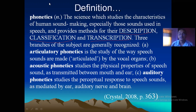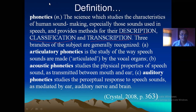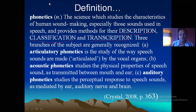Again, three branches of the subject are generally recognized. Number A: articulatory phonetics, which is the study of the way speech sounds are made or articulated by the vocal organs or speech organs. B: acoustic phonetics, which studies the physical properties of speech sounds transmitted between mouth and ear. And C: auditory phonetics, which studies the perceptual response to speech sounds as mediated by the ear, auditory nerves and brain.